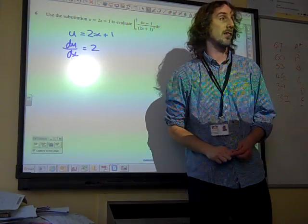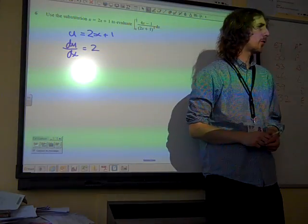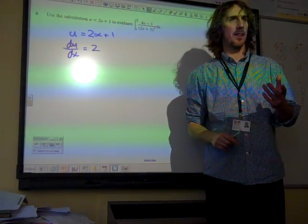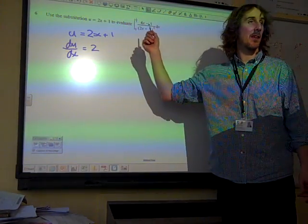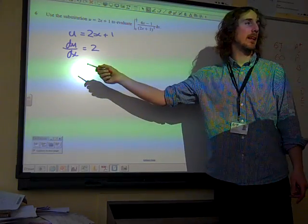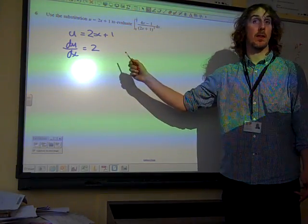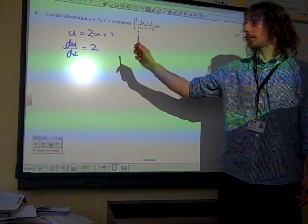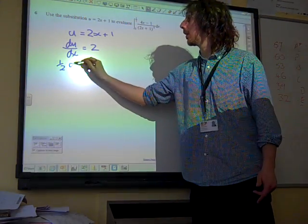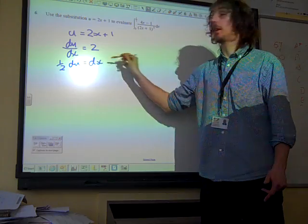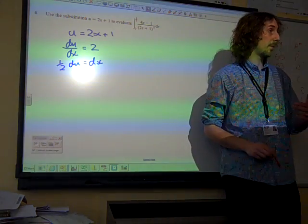So du by dx is 2. Now remember, what we're trying to do with this is replace dx. And if there's nothing obvious appearing in here, rewrite this so you've got the dx on its own. So if we rearrange this, it's a half du is dx. So that's going to take part in our substitution.